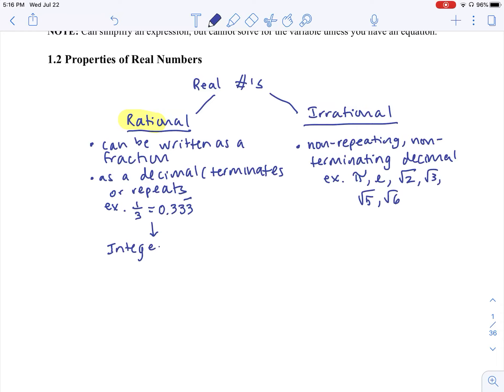So the next level of classification would be within the rational family, there's integers. And integers are the rational numbers that include all of the negative numbers.